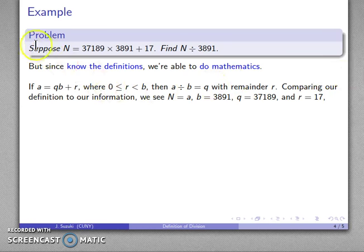And again, we'll compare our statement to our definition. And we see that a and n are the same, q is 37,189, b is 3,891, r is 17. So if I want to find a divided by b, that's n divided by 3,891, it must be the other number, 37,189, with remainder 17. And so that gives us our quotient and remainder.